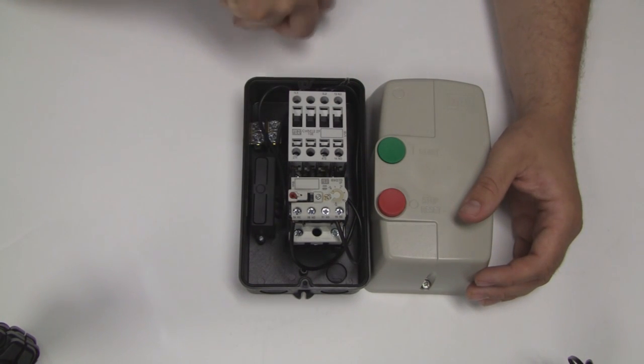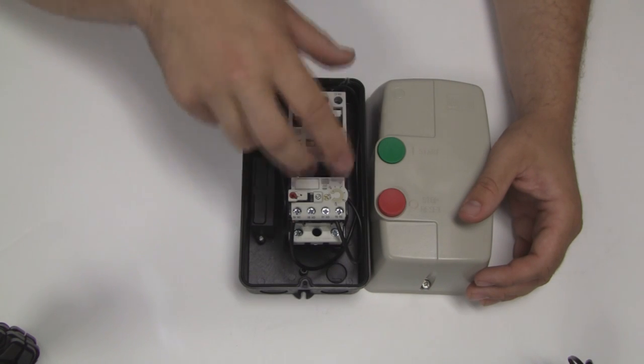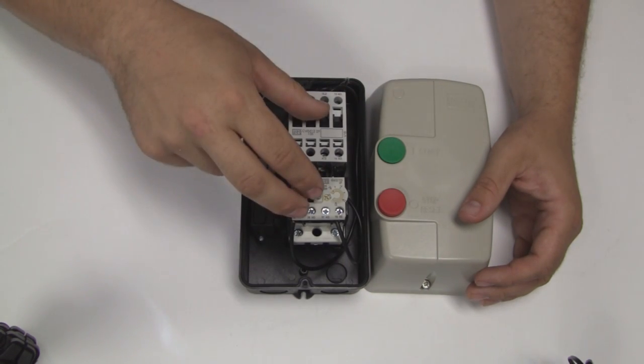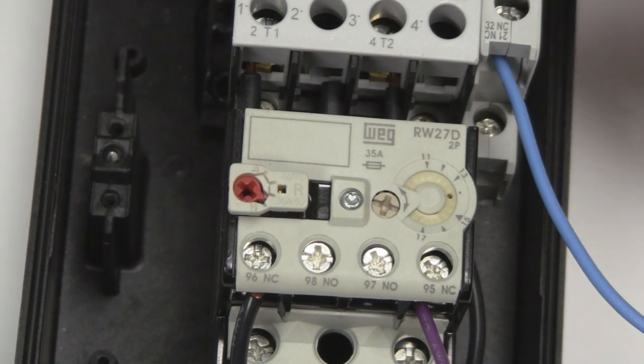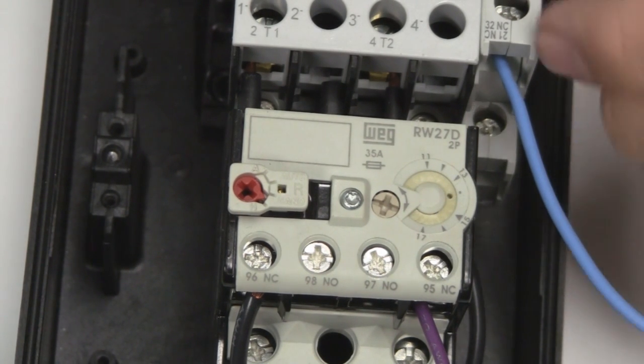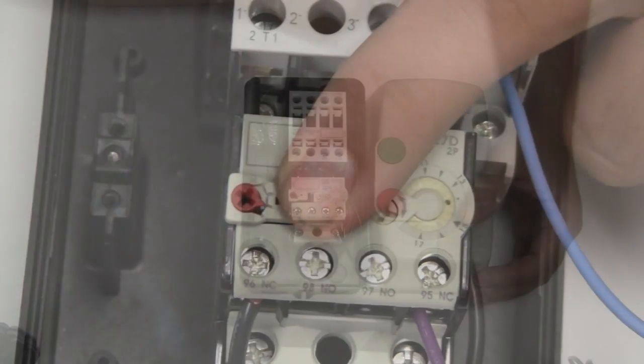Say you've got fuses upstream, power coming in and your motor bogs down and starts to draw too much current. You'll pop this device which is resettable and not necessarily blow the fuses upstream.